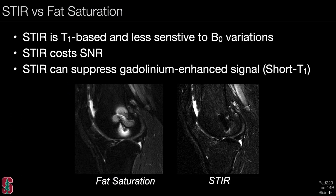Comparing STIR versus fat saturation: STIR is T1-based, so it is less sensitive to B0 variations. In examples where the subject has metal in the knee, fat saturation fails quite badly because of B0 variations, but STIR suppresses fat quite uniformly regardless of the background static magnetic field. However, STIR costs SNR—the image is quite a bit noisier. Also importantly, STIR doesn't work well with gadolinium enhancement, because gadolinium-enhanced signal has a short T1 similar to fat, and STIR actually suppresses that signal.